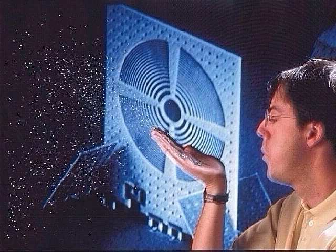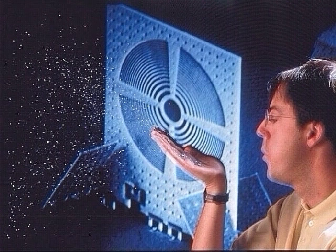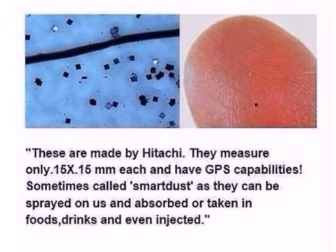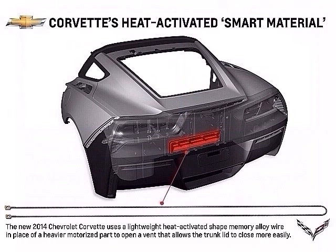Smart materials are designed materials that have one or more properties that can be significantly changed in a controlled fashion by external stimuli such as stress, temperature, moisture, pH, or electrical and magnetic fields. Shape memory alloys, electrochromic materials, and electrorheological materials are examples of this.